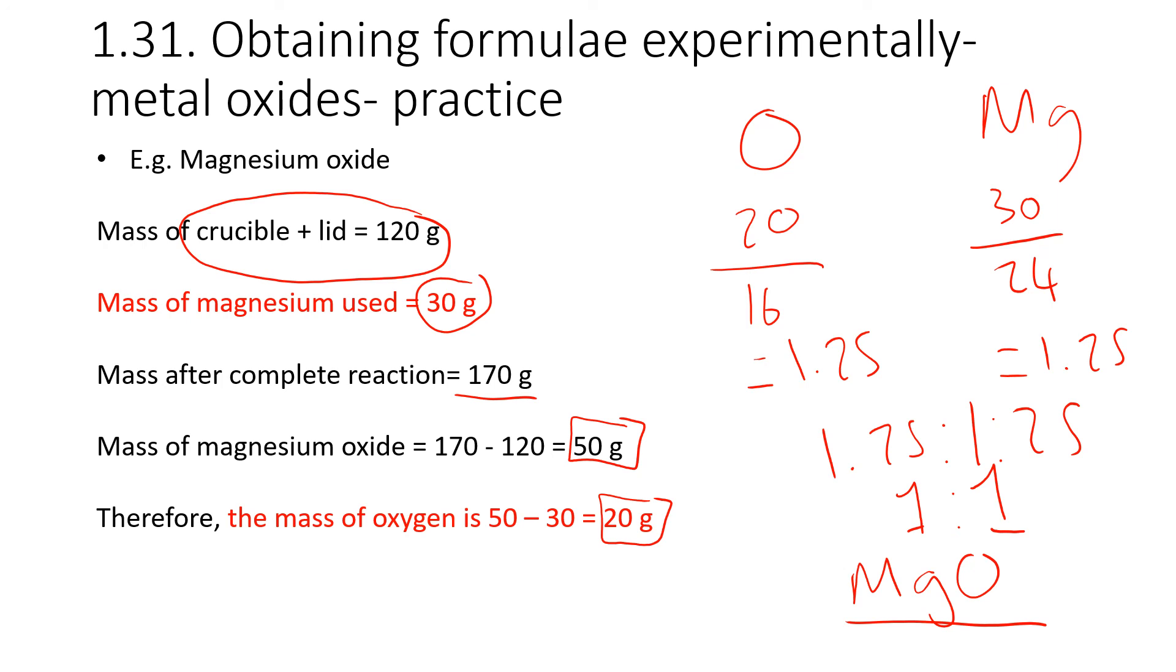Now, if you're wondering about the order, why did I put Mg before O? In ionic compounds, in metal oxides, the metal always comes first in the equation. So it couldn't be OMG, it would have to be MgO.